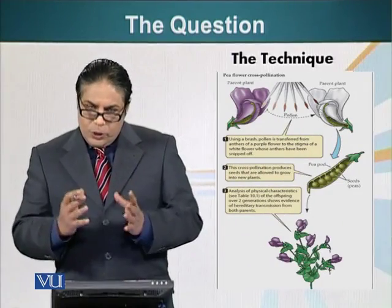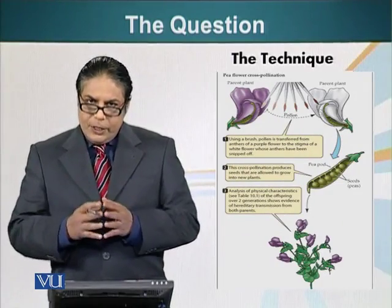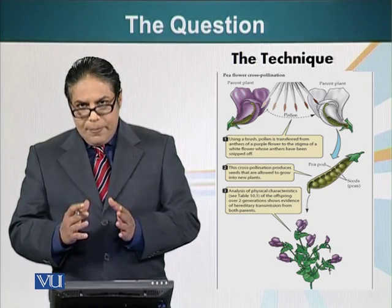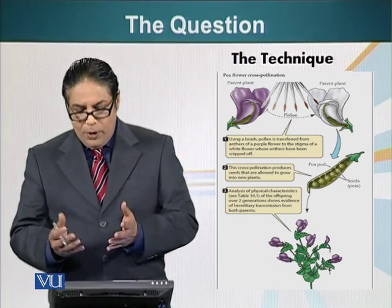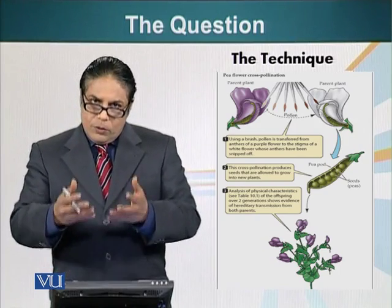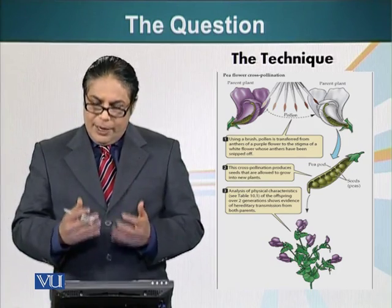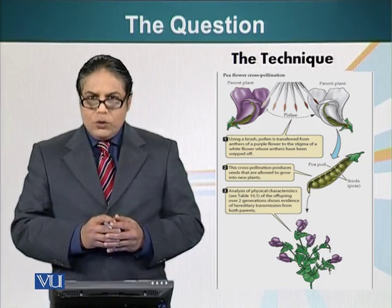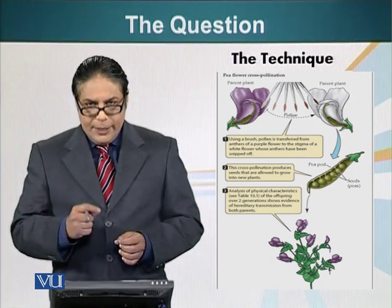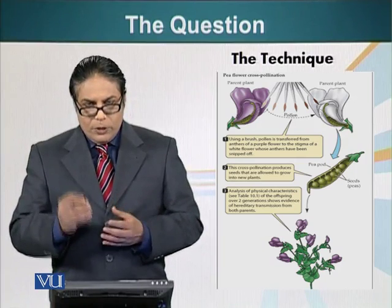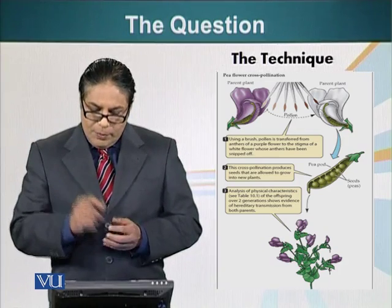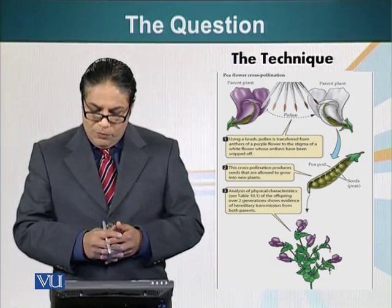Mendel used these plants, which could also be controlled such that he could remove the male or female sex organs, or he could self-pollinate the plant itself. The technique Mendel used was simple — he used a paintbrush. He rubbed it on the anthers and collected pollens at the tip of the brush, and later dusted them on the stigma of the female part of the flower.